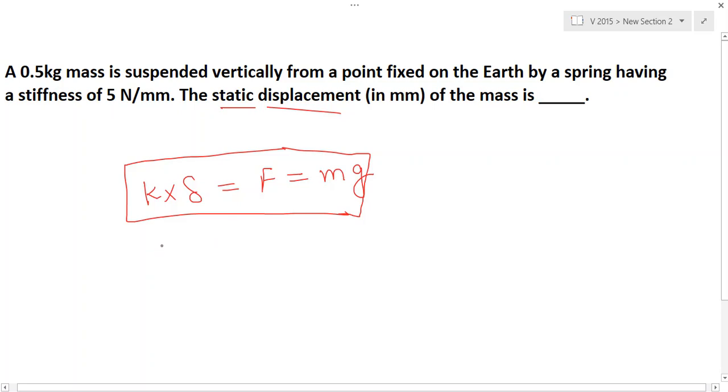So k is 5, δ is what we're finding, m is 0.5, and g we know is 9.81. Using this we can find delta value: δ = 0.5 × 9.81 ÷ 5, which equals 0.981 mm. This is the right answer.